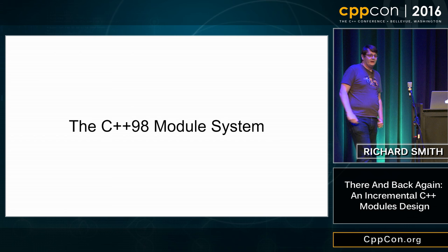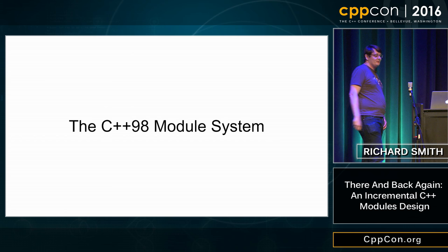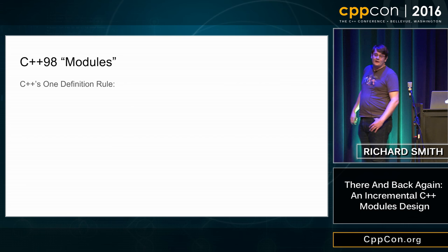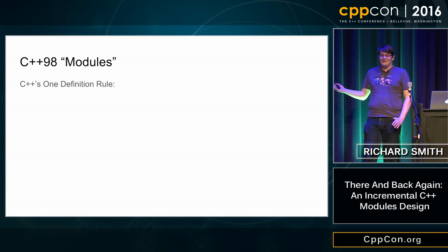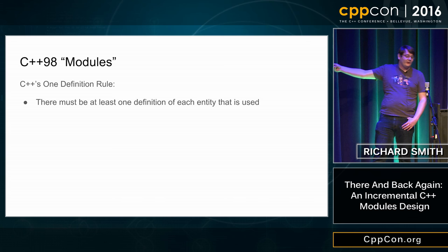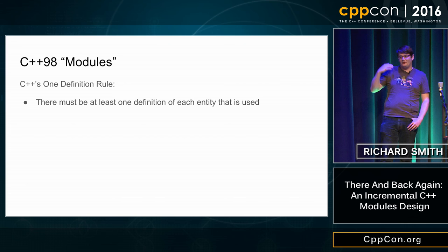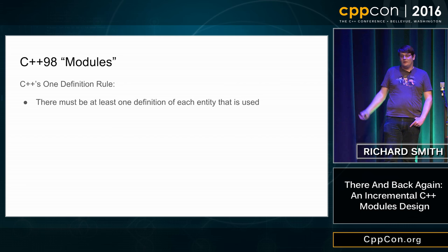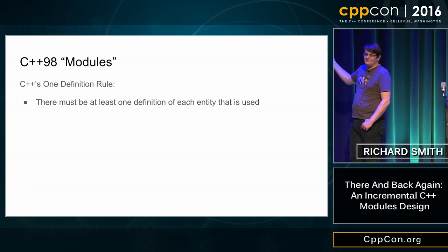For a C++ module system to be useful and correct from a language lawyer perspective, it must conform to the standard and do what people meant when they wrote their source code. I'll start by talking about C++'s one definition rule. ODR number one: there must be at least one definition of each entity that is used by a program. In C++, 'used' means something complex — roughly, if you use it in an evaluated context, there must be a definition. But that can't be it — this is C++, so there's not one one-definition rule.